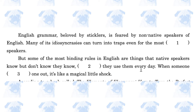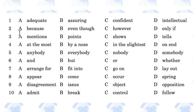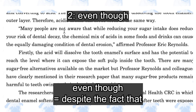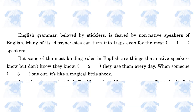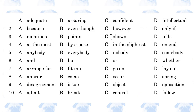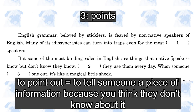Blank, they use them every day. The options are: because, even though, however, only if. The answer is B, even though — things the native speakers know but don't know they know, even though they use them every day. When someone blanks one out, it's like a magical little shock. The options are: mentions, points, shows, tells. The answer is 'when someone points one out' — point out is the phrase.